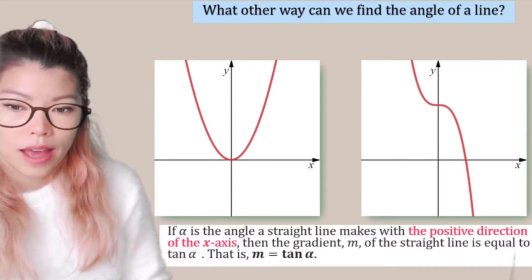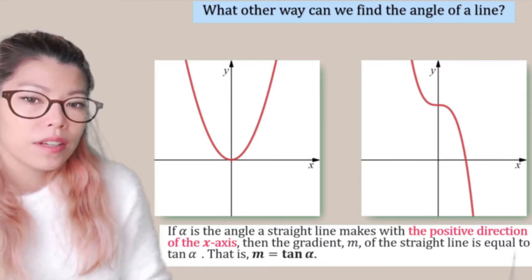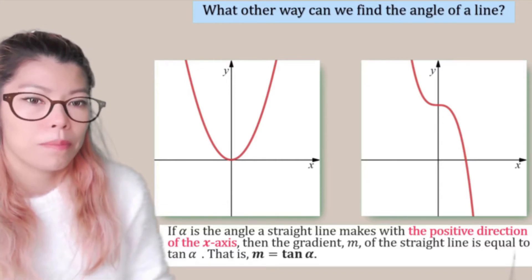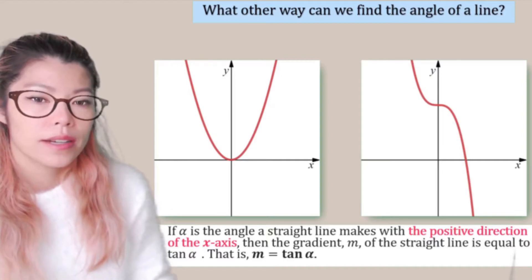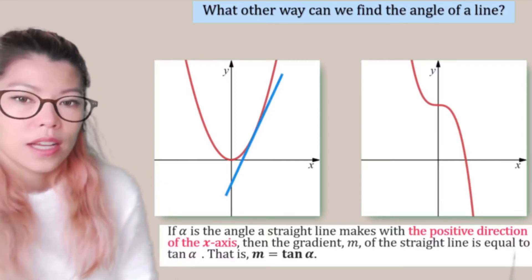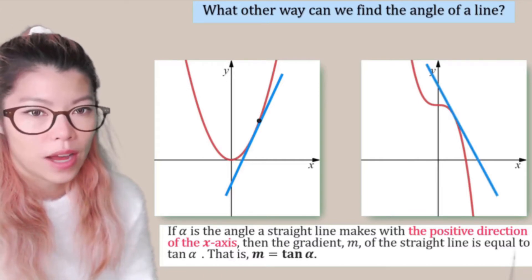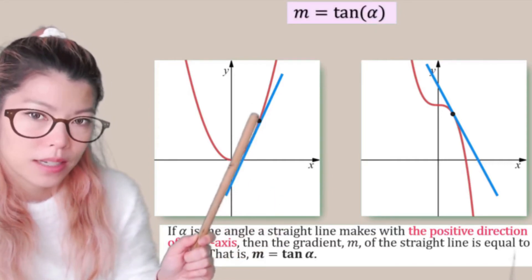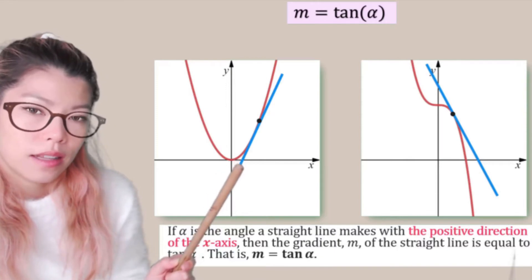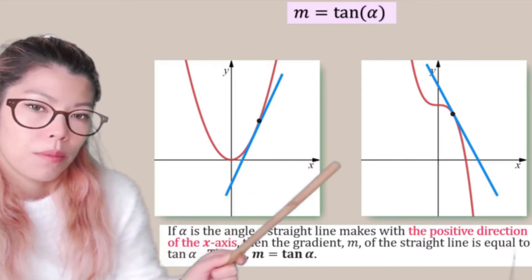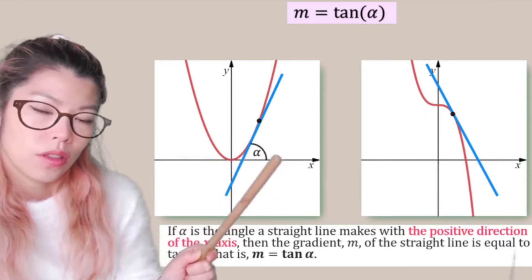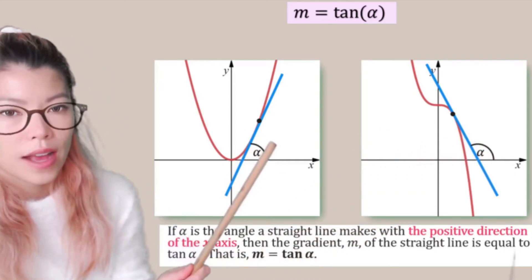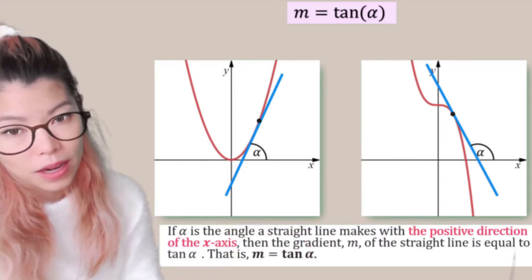What other way can we find the angle of a line? If alpha is the angle a straight line makes with the positive direction of the x-axis, then the gradient M of the straight line is equal to tan(alpha). When we look at the angle, we always measure it from the positive x-axis — always on the right side. So if we wanted to find the other angle, we'd have to do 180 minus that angle.